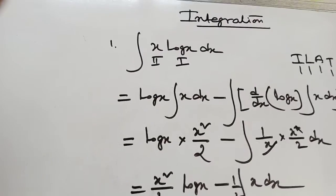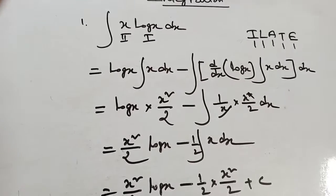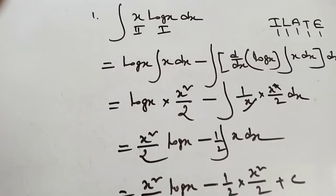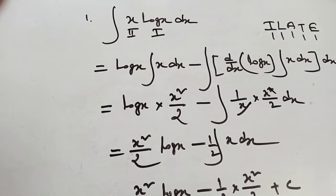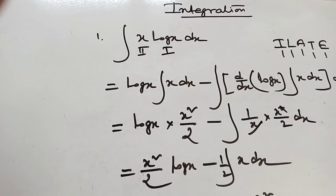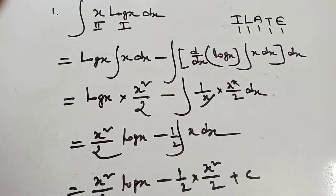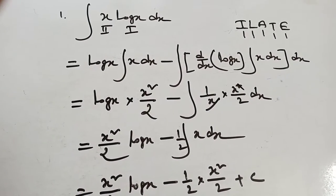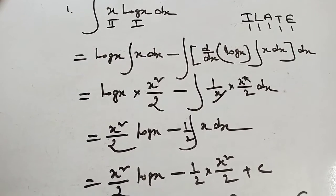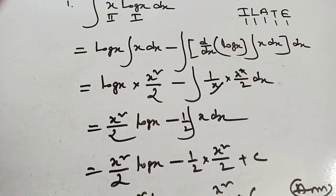Integration of x into ln(x) dx. Apply the ILATE formula — that means here log x is the first function and x is the second function. Then apply the formula of integration by parts: first function log x, integration of x dx, minus...